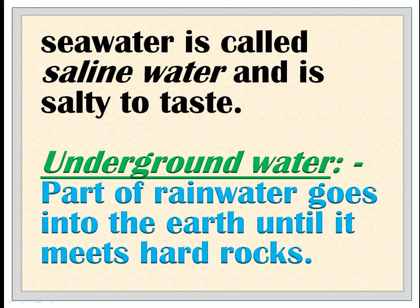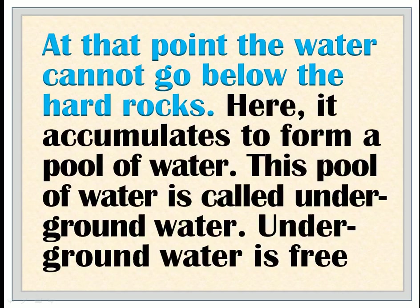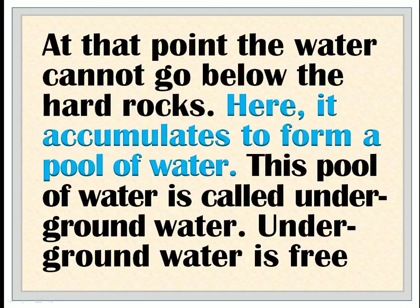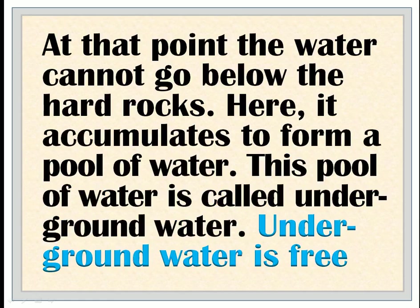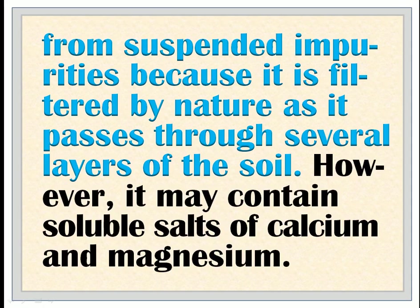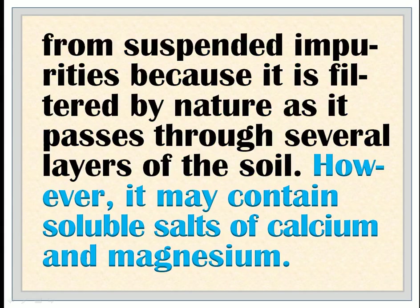Underground water: Part of rainwater goes into the earth until it meets hard rocks. At that point the water cannot go below the hard rocks. Here, it accumulates to form a pool of water, called underground water. Underground water is free from suspended impurities because it is filtered by nature as it passes through several layers of the soil. However, it may contain soluble salts of calcium and magnesium.